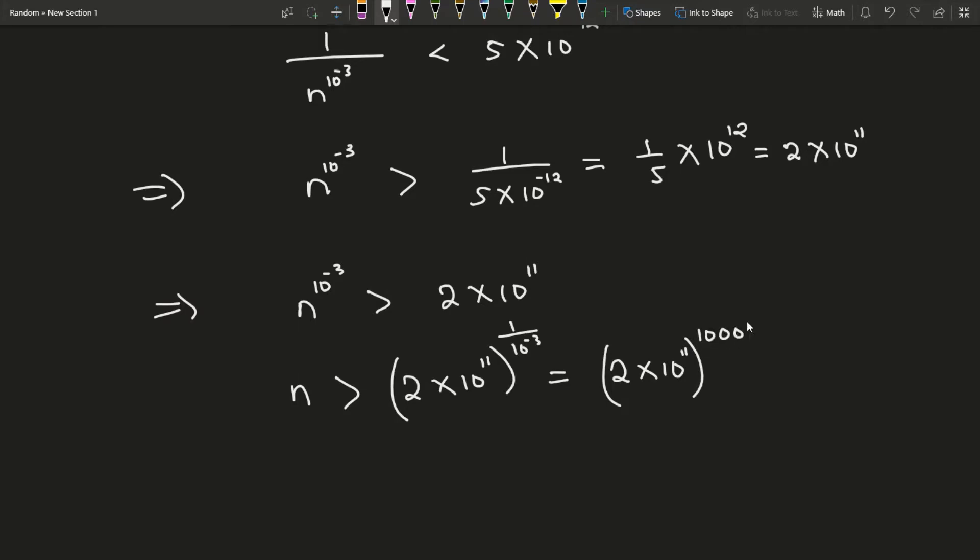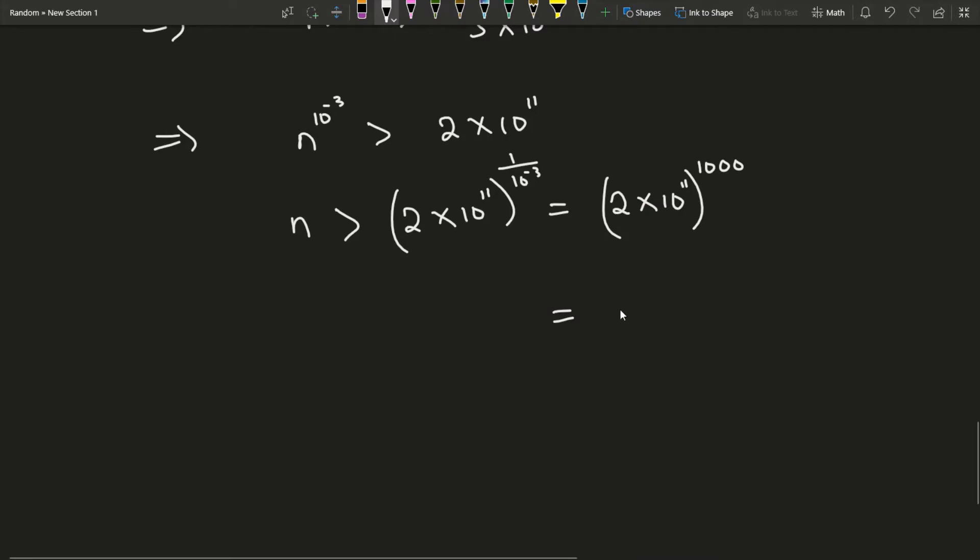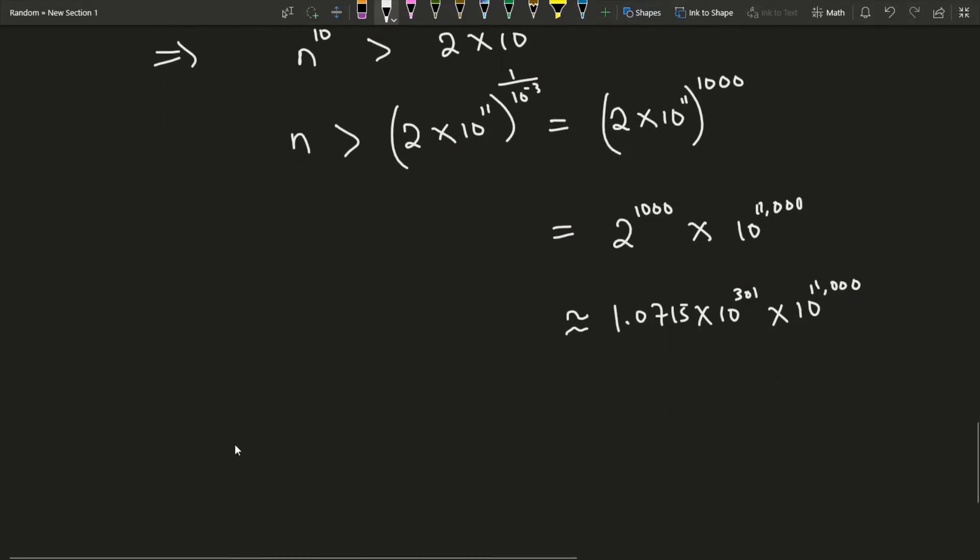If you work this out, 2 times 10 to the 11 times 1000 becomes 11000. If you plug this into a calculator you get 1.0715 times 10 to the 301, multiplied by 10 to the 11000. So n must be bigger than 1.0715 times 10 to the 11301.